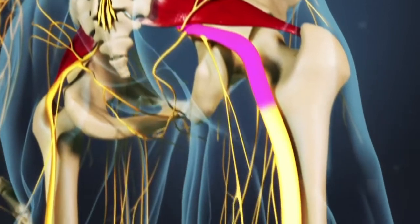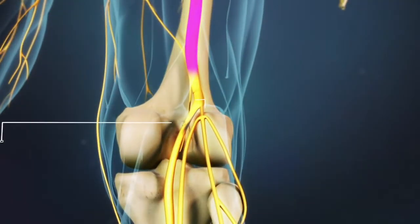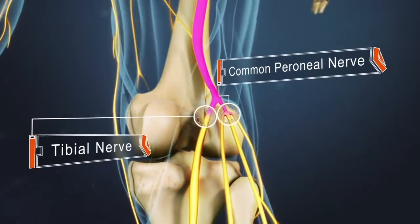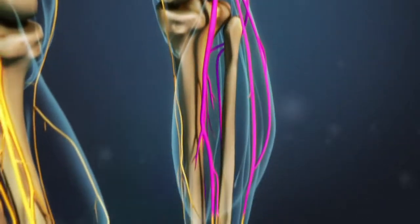The sciatic nerve then travels down the back of the upper thigh. Above the back of the knee, the sciatic nerve divides into two nerves, the tibial and the common peroneal nerve, both of which serve the lower leg and foot.